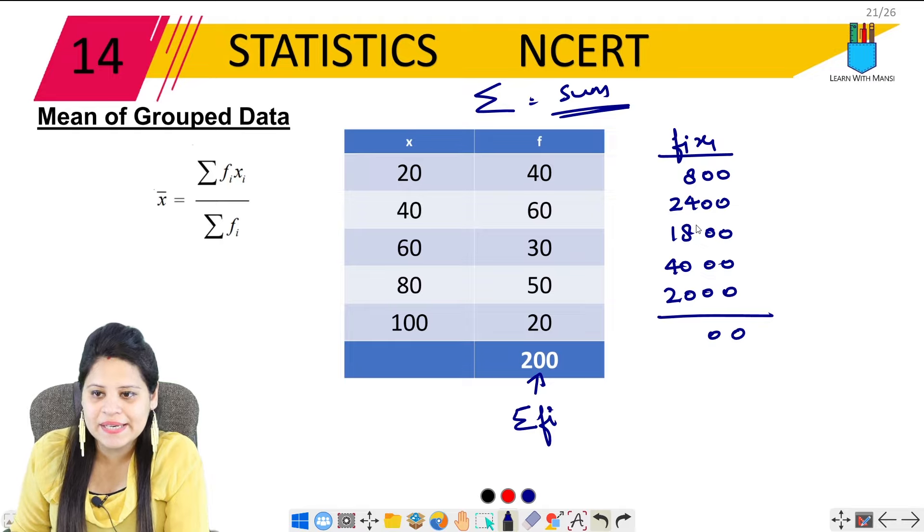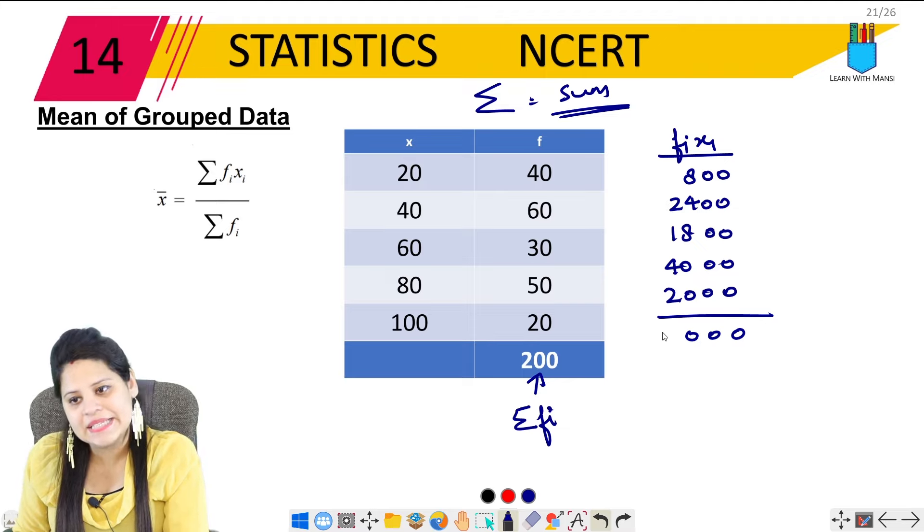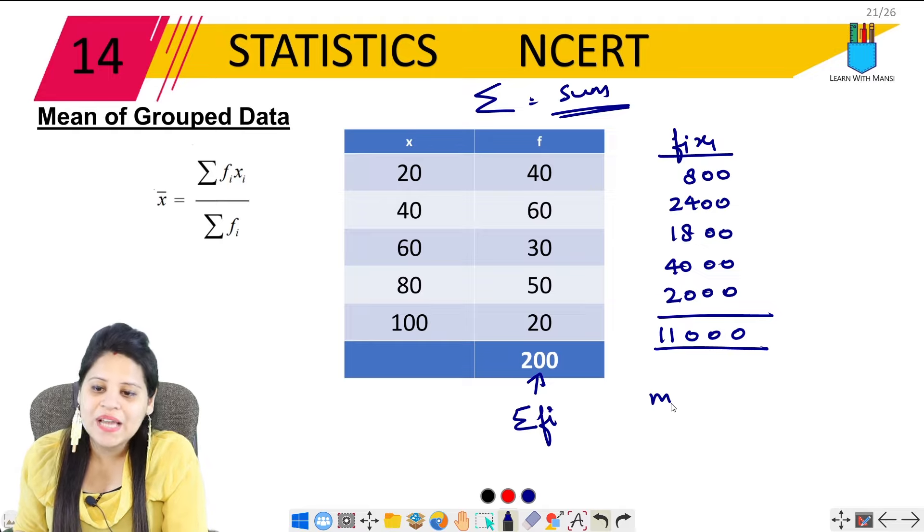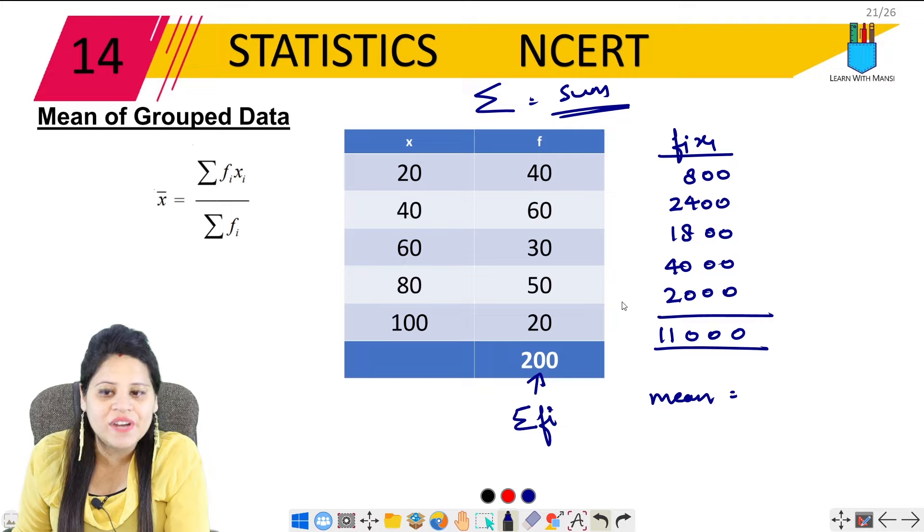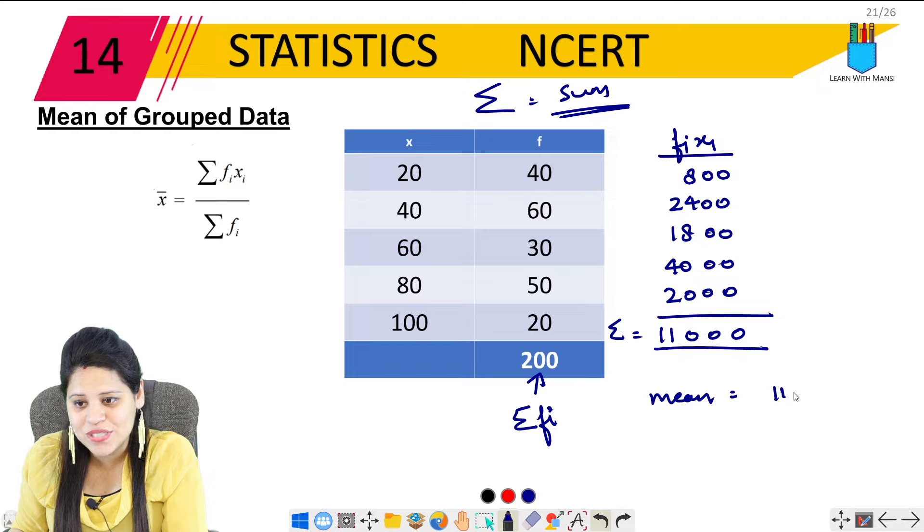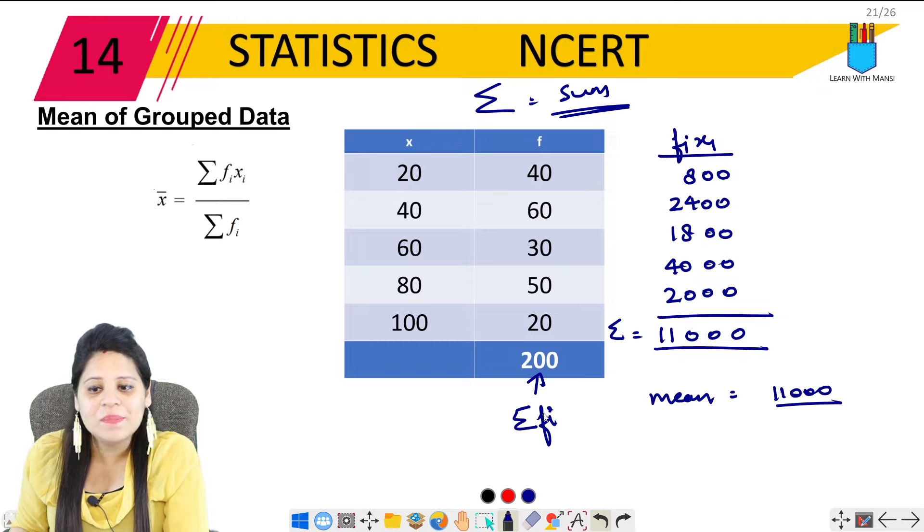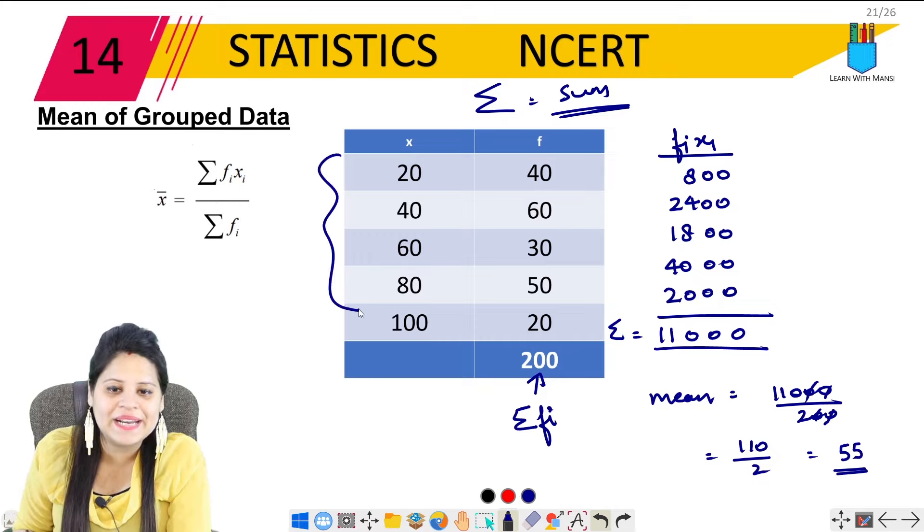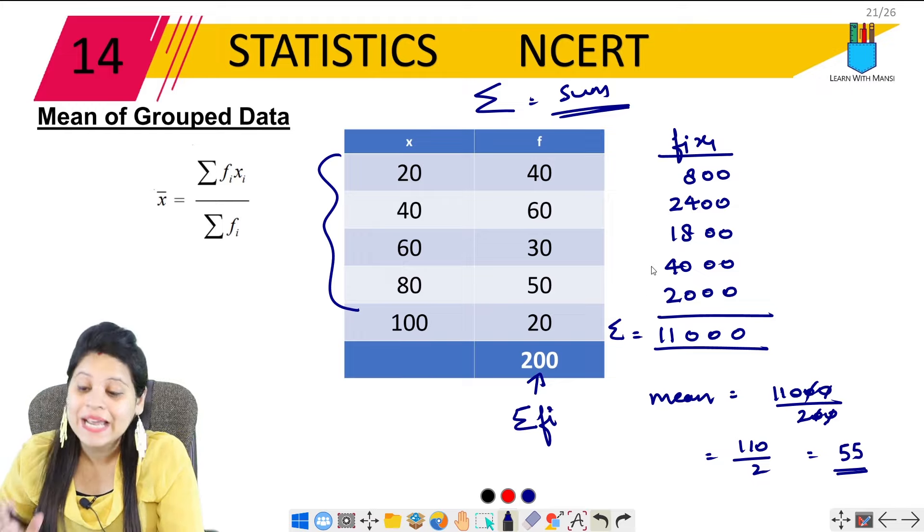So this will happen: 4 times 2 equals 8, 6 times 4 equals 24, 6 times 3 equals 18, 8 times 5 equals 40, 2 times 1 equals 2. Now let's do this total: 8 plus 24 plus 18 plus 40 plus 2. That means 1100. So now the mean will be summation FI XI which is 1100 upon summation FI which is 200. So 0 to 0 cancel, 110 upon 2 equals 55. So this is our mean of data: 55.